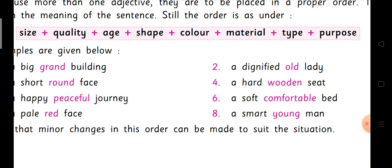Next: 'A hard wooden seat.' Hard is quality and wooden is the material — quality comes first, then material. Then: 'A soft comfortable bed.' Soft is quality and comfortable is the type. And the last example: 'A smart young man.' Smart is quality and young is age.